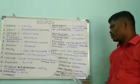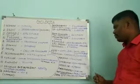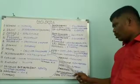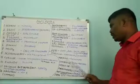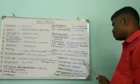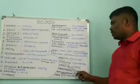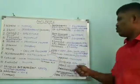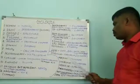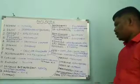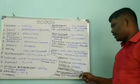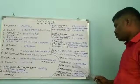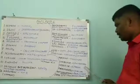In penicillin overdose, adrenaline or epinephrine is used as an antidote. In morphine overdose, naloxone is used as an antidote. Morphine is a content of opioids, so in opioid overdose, naloxone is used as an antidote. Vincristine is a chemotherapy drug. In vincristine overdose, hyaluronidase is used as an antidote.